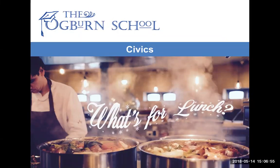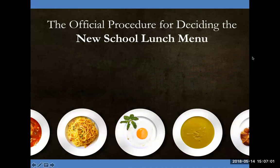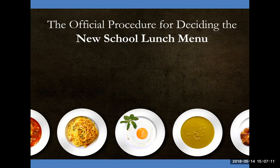Lesson 7: What's for lunch? In the federal government, different jobs or procedures follow the different parts of the government: Congress, the Supreme Court, and the President. To explain this, we are going to use the following scenario: the official procedure for deciding the new school lunch menu.